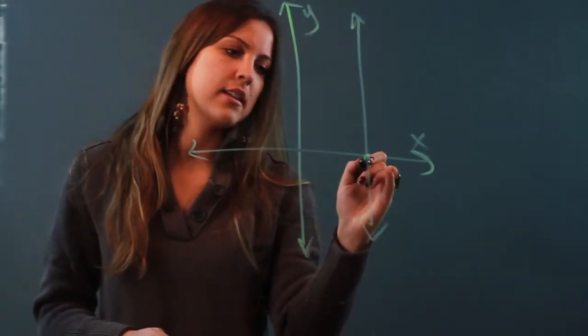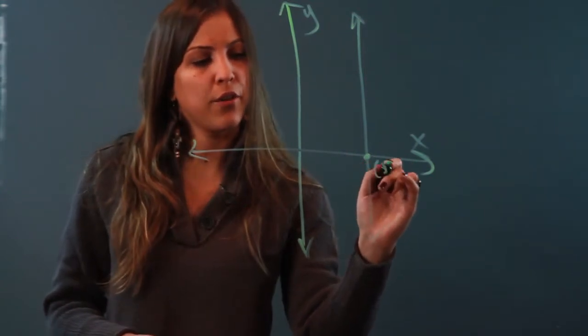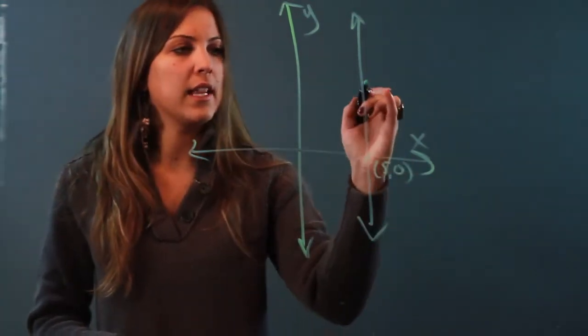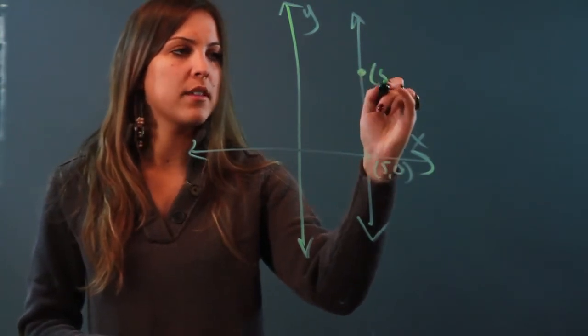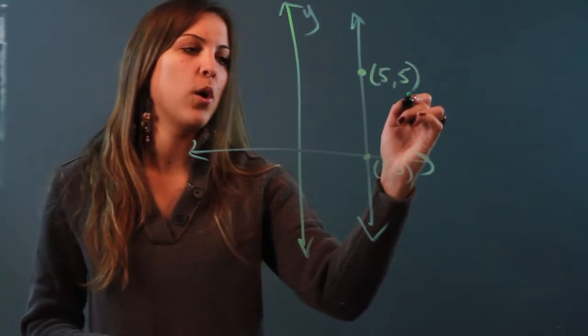We'll say that's along x equals 5. So we'll call this point right here (5,0) and let's pick another point on the line so we can find the slope. We'll say that point is estimated to be about (5,5).